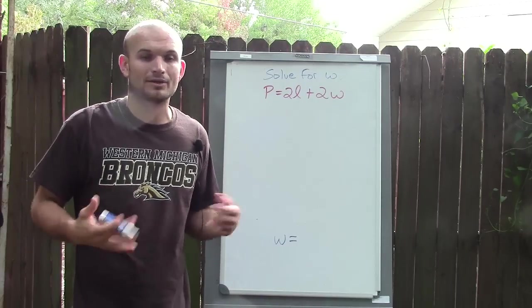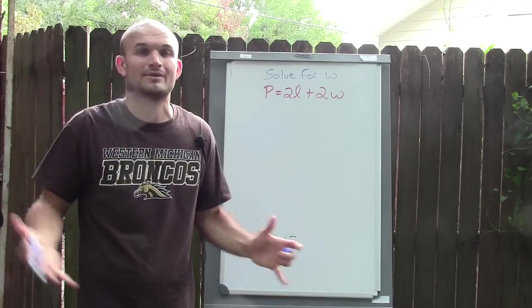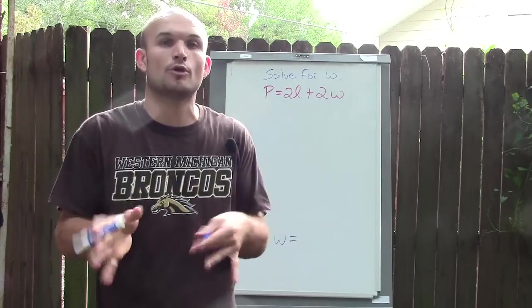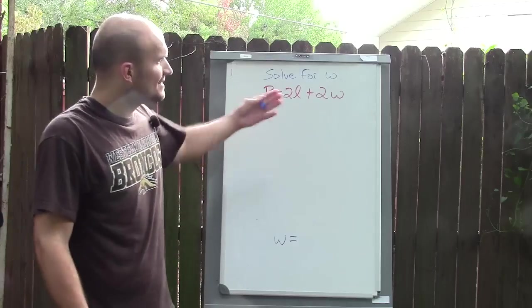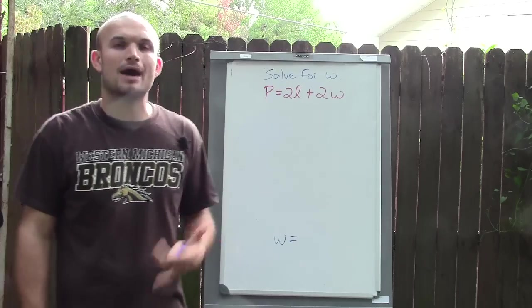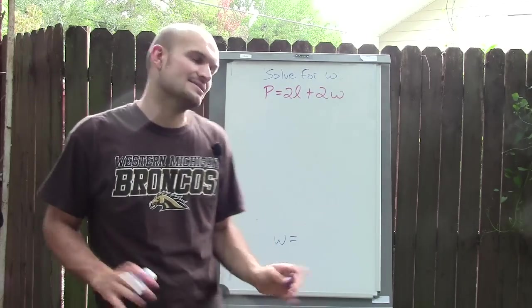Now when we're doing other regular equations, we get a value, right? We say W equals 5, W equals 8. We get a value, then we can go back and check our solutions. This is going to be a little more difficult because we have other variables. However, the process is exactly the same.